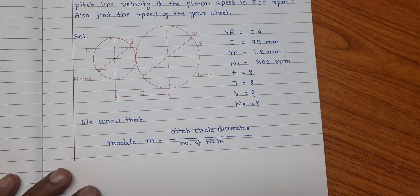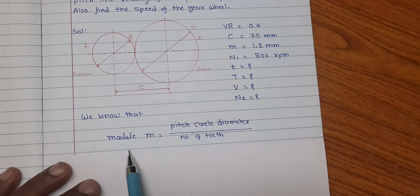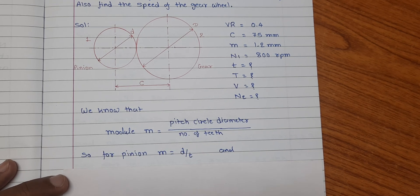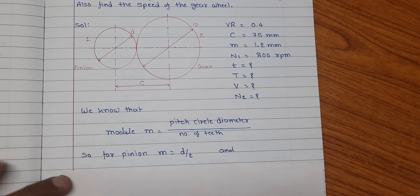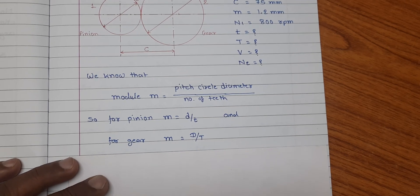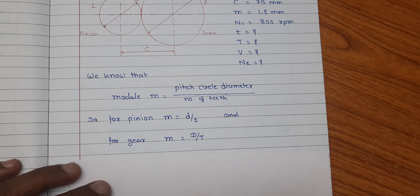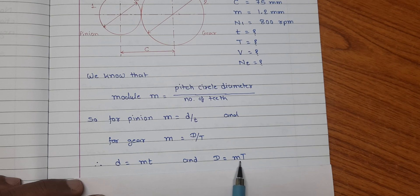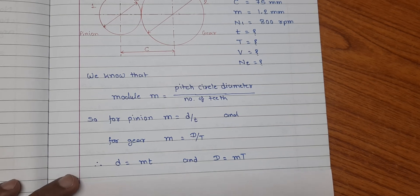We know that the module is given by m = pitch circle diameter divided by number of teeth. So for the pinion we write m = d / t, and for the gear m = D / T. Since the module for both gears in a meshing pair must be the same, we can write: d = m·t and D = m·T.